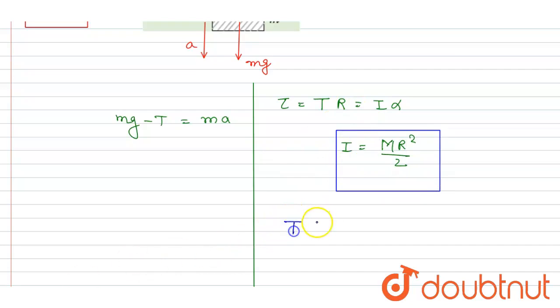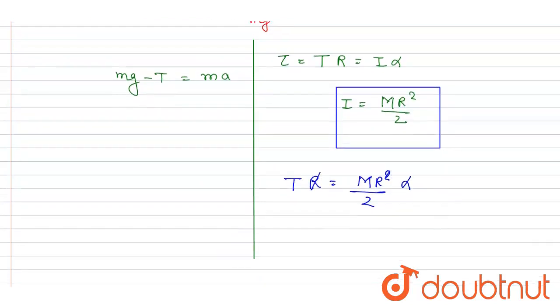Now, I will write T into R equals MR squared by 2 into alpha. And from here, you will get the value of T. It is MR by 2 into alpha. Right? Now, you can put the value in this equation.